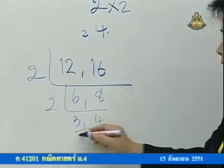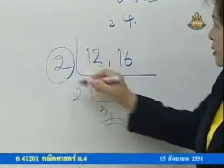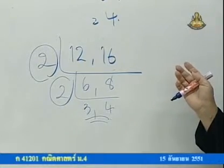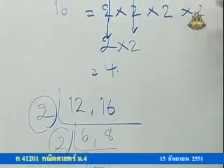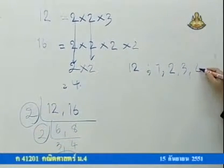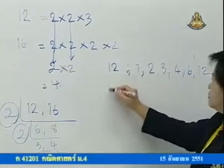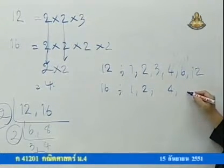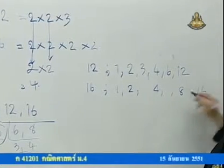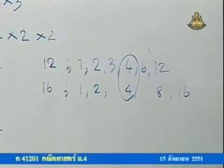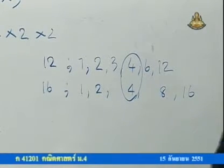Two, three, six, two, four, eight. This one is not available. The second one: 1, 2, 3, 4, 6, 12, 16 and 1, 2, 4, 8, 16.